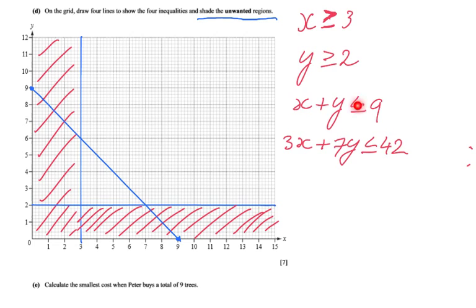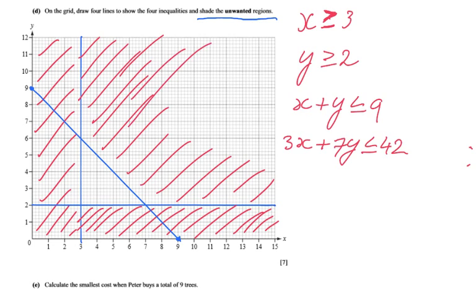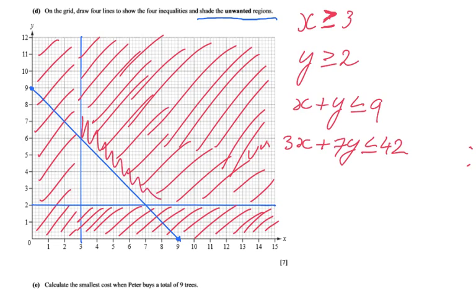We are interested in smaller. So we're interested in smaller. So we're going to shade the part which is bigger. So over here, we're going to shade it like that. And please stay within the grid. So we are shading it like this. There we go. Last one.